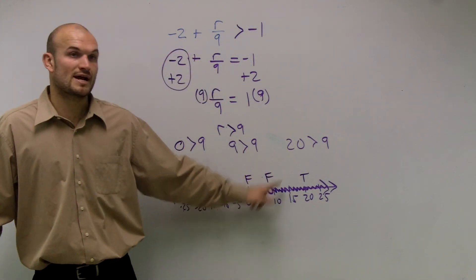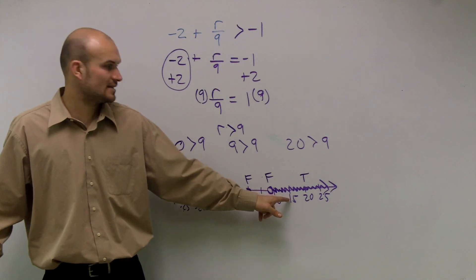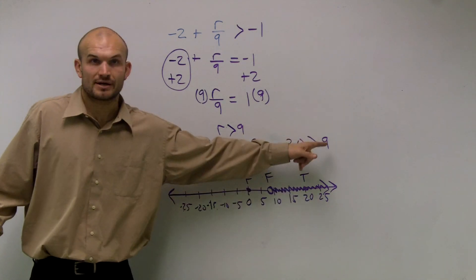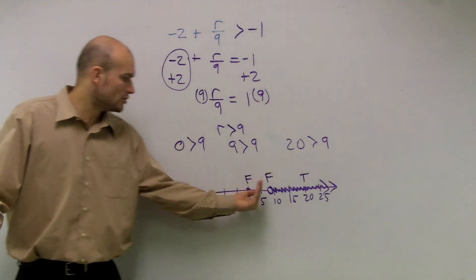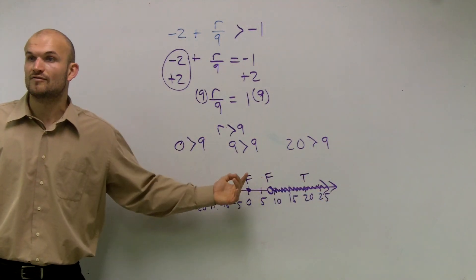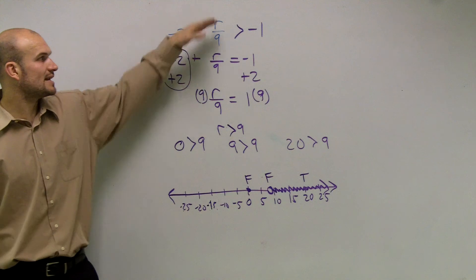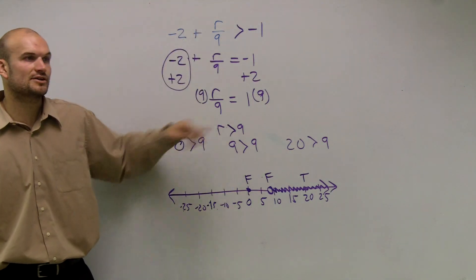But my graph is going to go to the right. Meaning, all numbers greater than 9, like 15 greater than 9, 25 greater than 9. All numbers to the right of that dot are true. All numbers to the left and at the dot are false. Make sense? Just set it as an equation, solve, put back in your symbol.